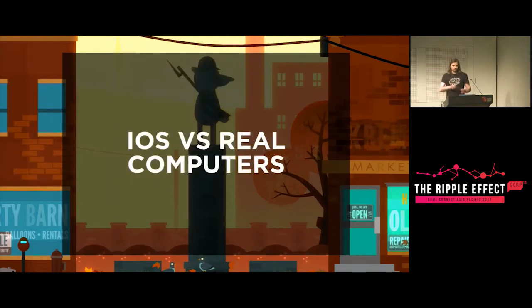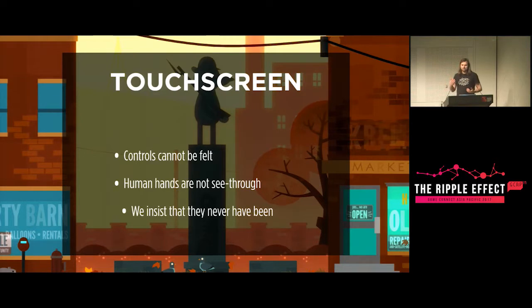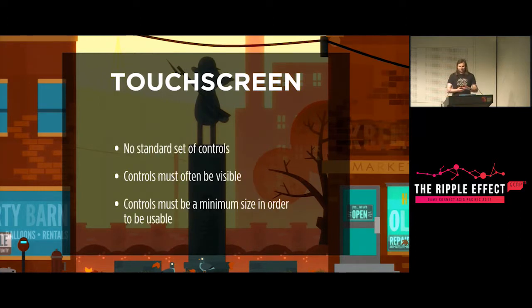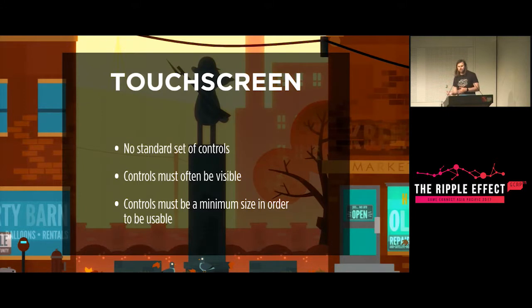I'm going to be talking about the difference between iOS and real computers. The key differences between mobile platforms and every other non-mobile platform — the big obvious one is the touch screen. Touch screens cannot be felt; individual areas cannot be felt on the touch screen. Additionally, human hands are not see-through. Because we have basically a blank canvas, every single game has a different kind of approach. There's no single set of controls that people can just fall back to — which is not the case for the PS4 or even the PC, where everyone is familiar with WASD.